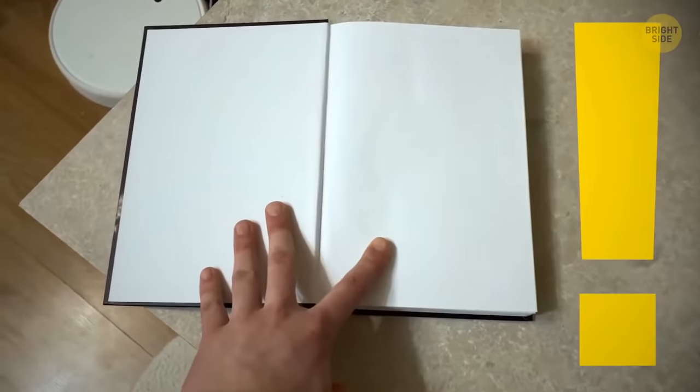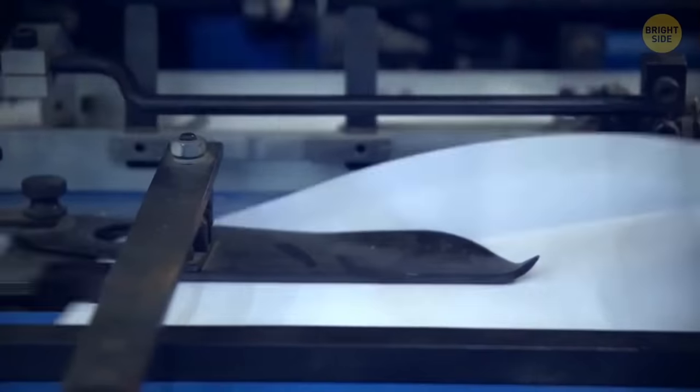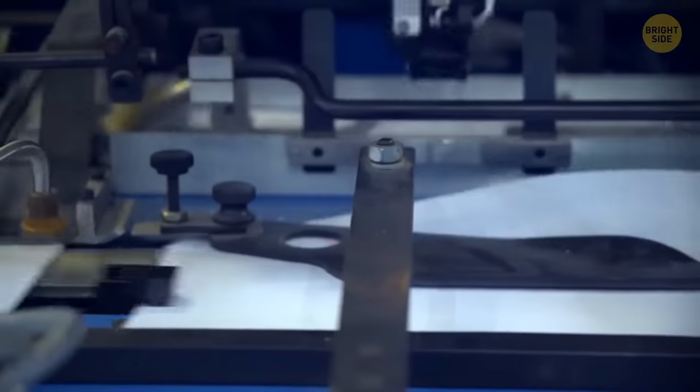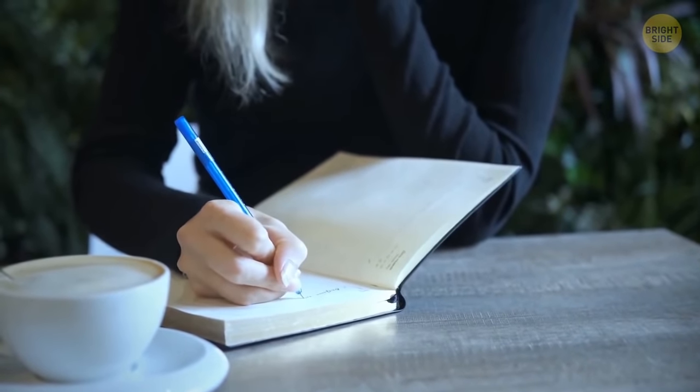Blank pages in the books aren't actually for the author's signature. It's all about the manufacturing process. Books are printed on large sheets, so one sheet can fit in four pages. If a book has an odd quantity of printed pages, chances are you'll get a blank one for notes.